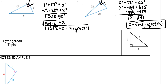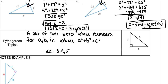Pythagorean triples are a set of non-zero whole numbers for a, b, and c such that a squared plus b squared equals c squared. In other words, all of them will be whole numbers — no weird square roots, no decimals. For example, 3 squared plus 4 squared equals 5 squared: 9 plus 16 is 25. It works out, so all of the values are whole numbers.